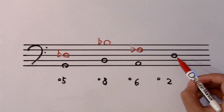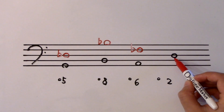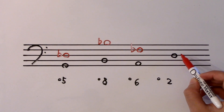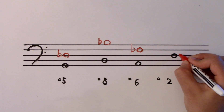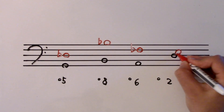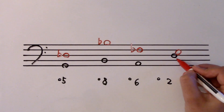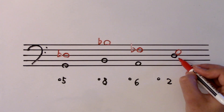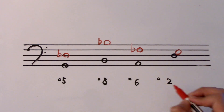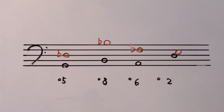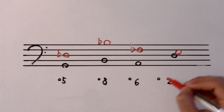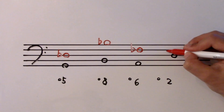And then D to E — that's a second. That's a major second because E is the second note of a D major scale. To reduce its size, add another flat.